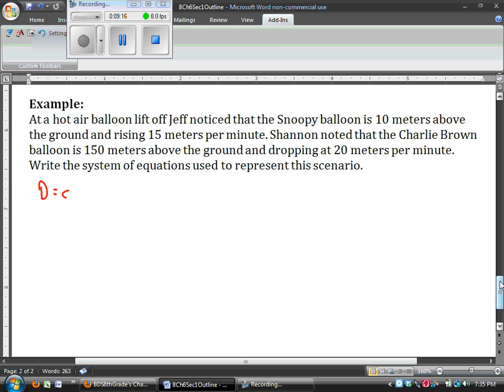And the other thing is how many minutes it's traveling. So I have two variables, two unknowns. That means I need two equations. So first we'll look at Snoopy. Snoopy is 10 meters above the ground and 15 meters per minute. So its total distance is 10 meters and it's rising, so it's going to be adding 15 meters per minute.